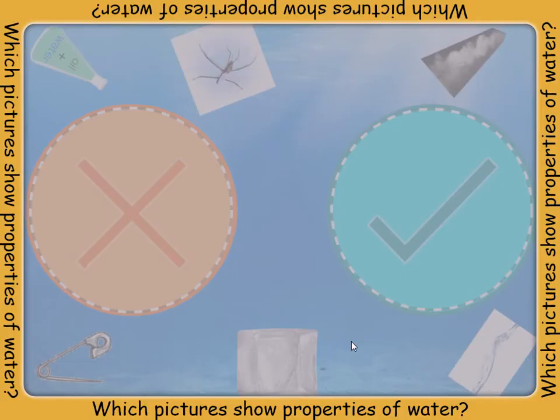Sort the different properties to show which ones belong to water. Tap each picture to hear what property it is, then drag it into the correct circle. The big check mark is for the properties that belong to water, and the big X is for properties that do not belong to water.